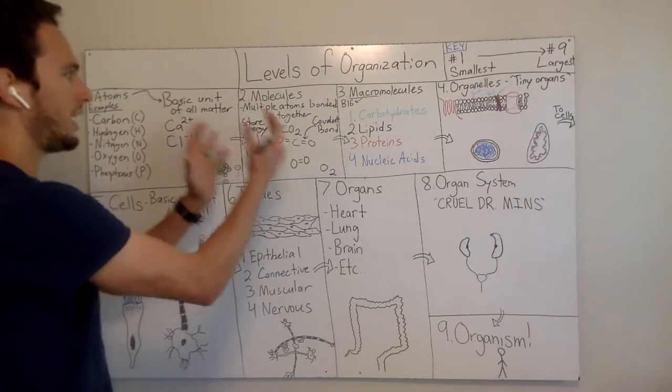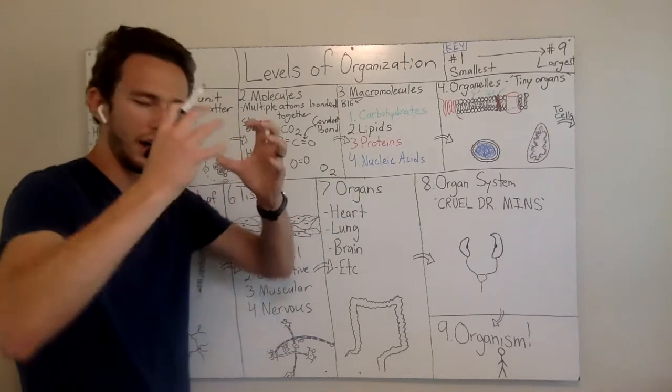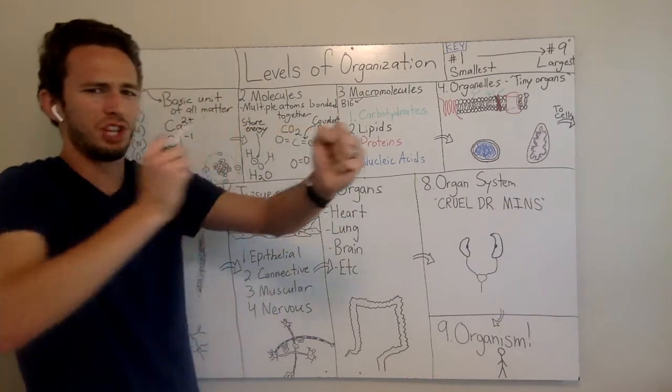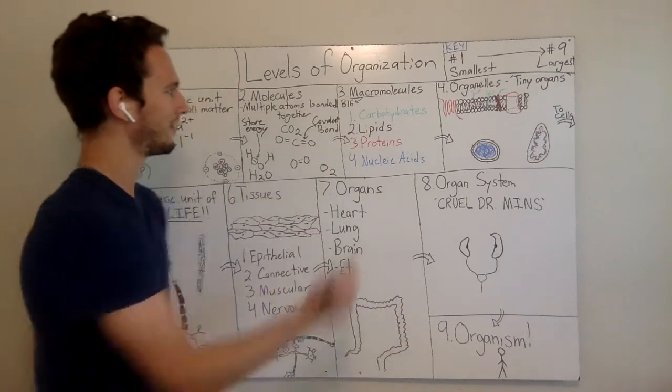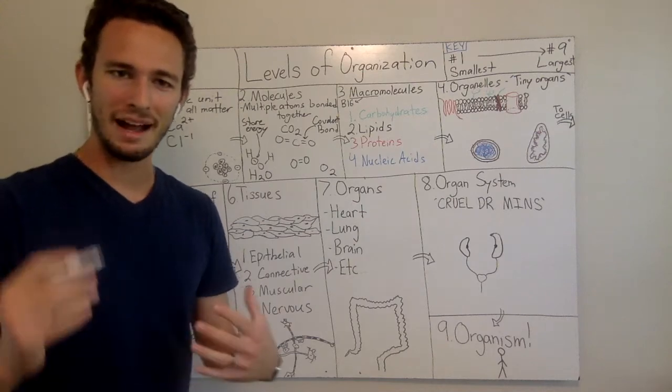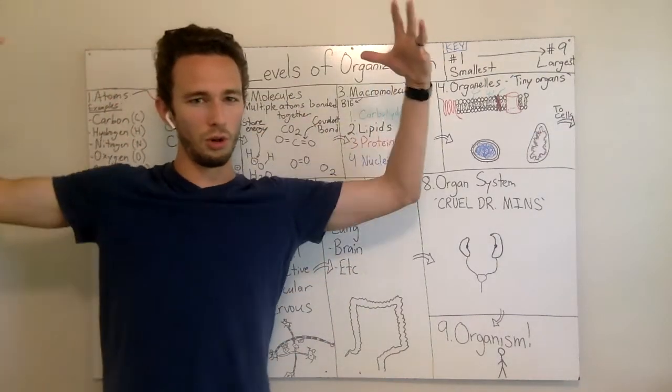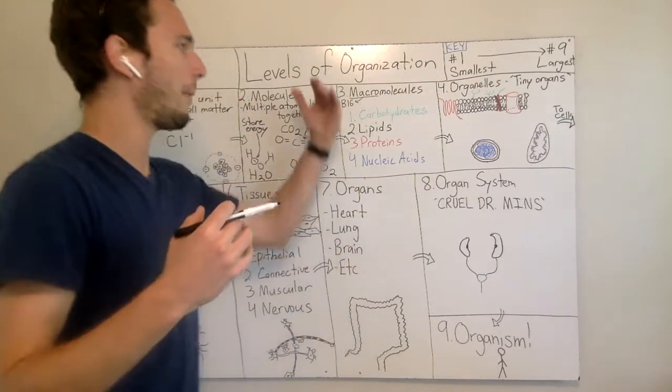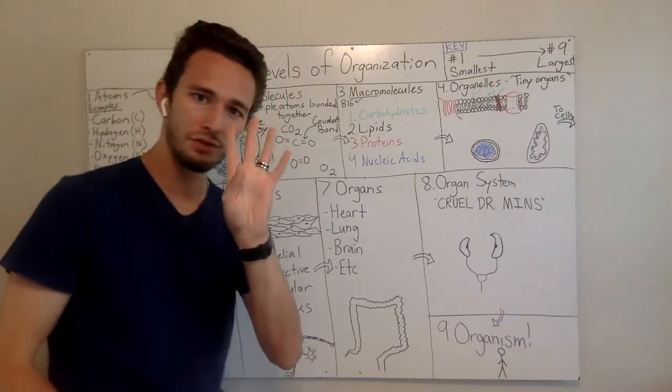So let's keep building up. We've got some molecules here. Now what if we have a ton and a ton of atoms chained together into this big molecule? We call it macromolecules. Macro means big. So like macroeconomics, looking at the whole of economics, macromolecules just means a big molecule.